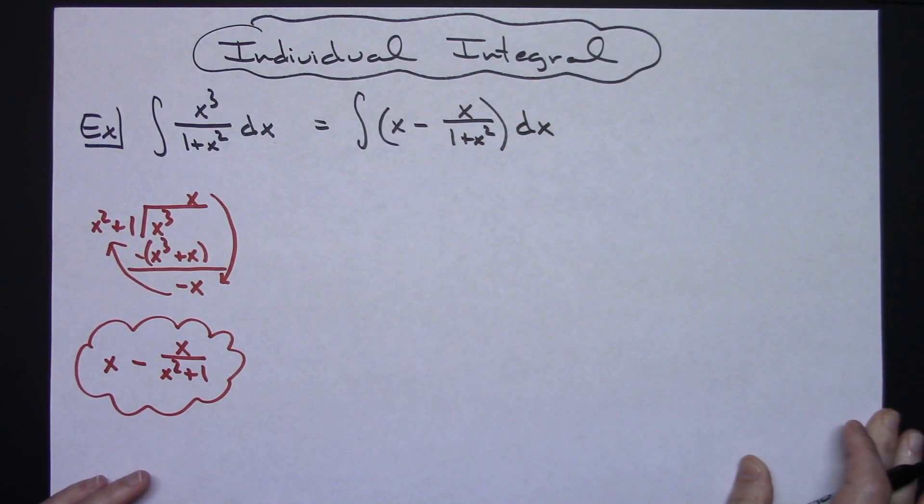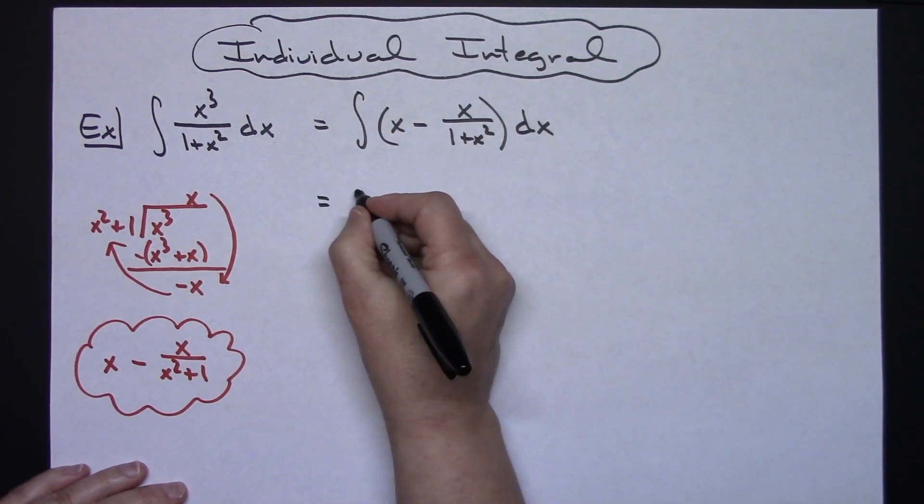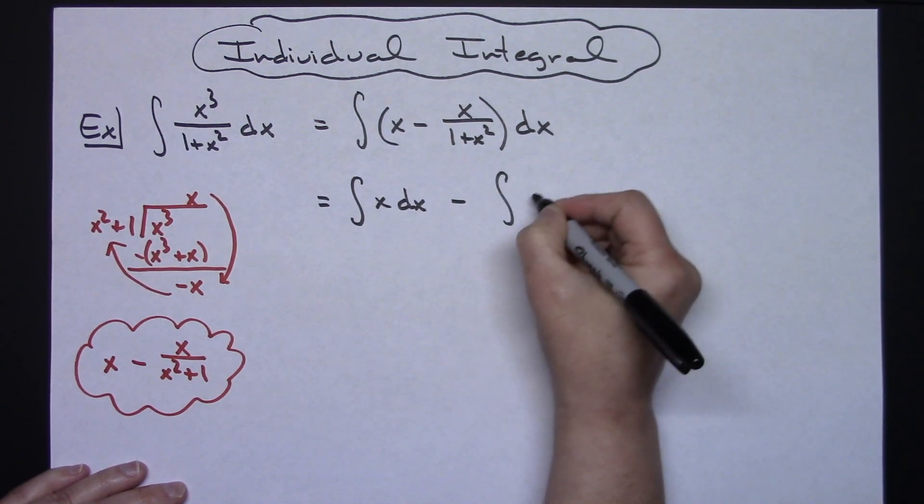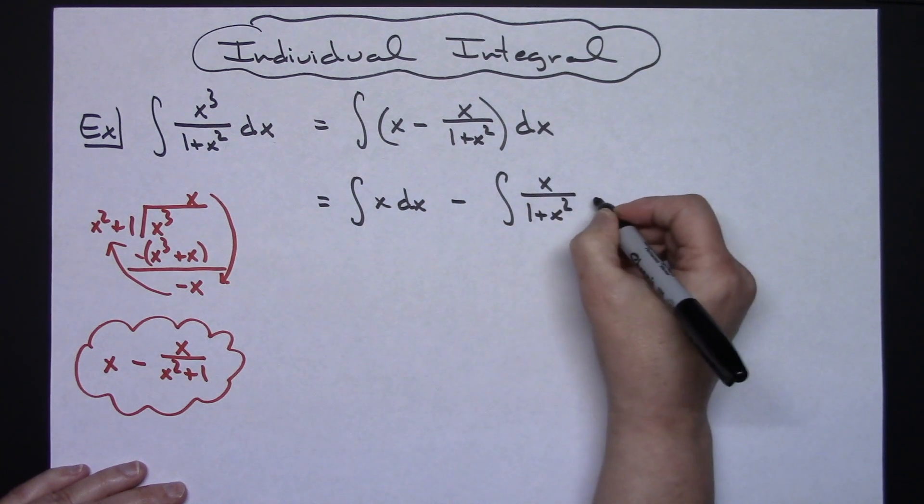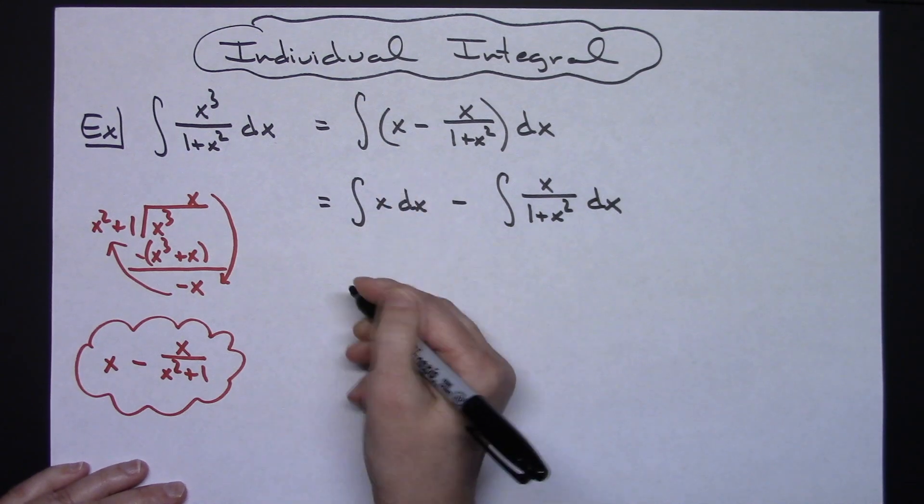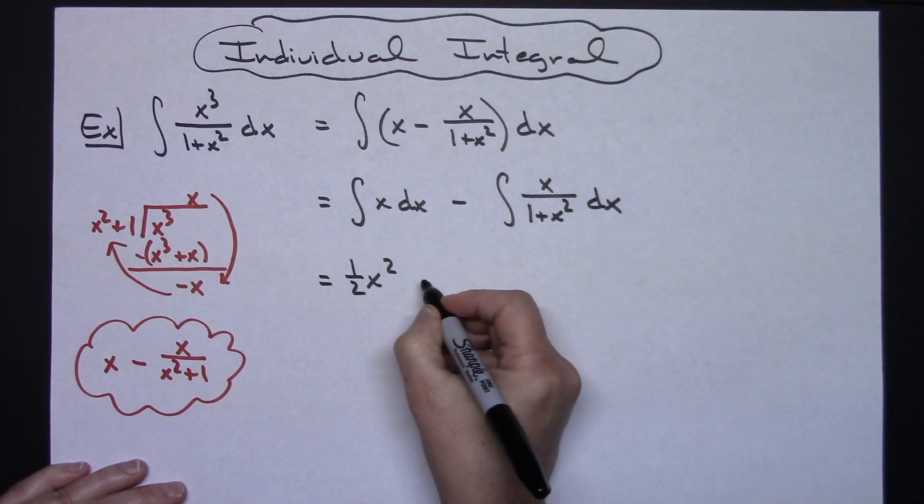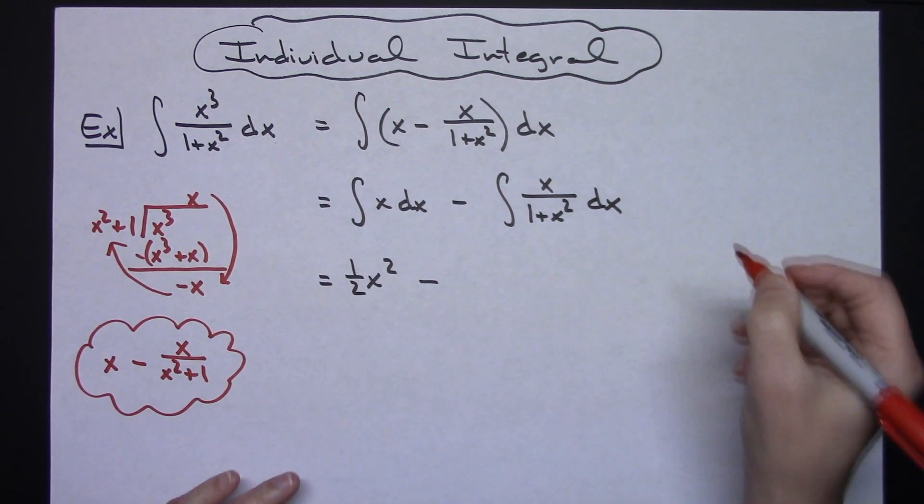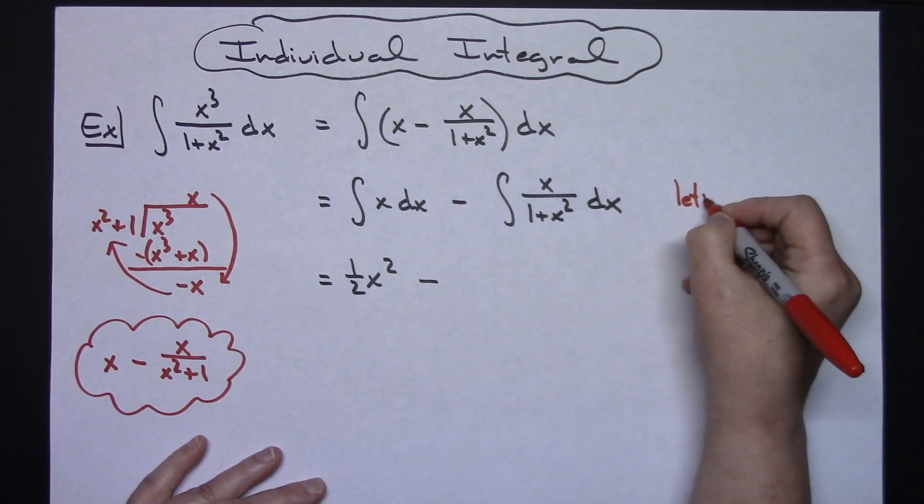Now what that's going to let me do now is break this up into two individual integrals. So I'll have the integral of x dx minus the integral of x over one plus x squared dx. This is going to integrate really easily—add one to that exponent, we'll have an x squared with a one-half out in front.